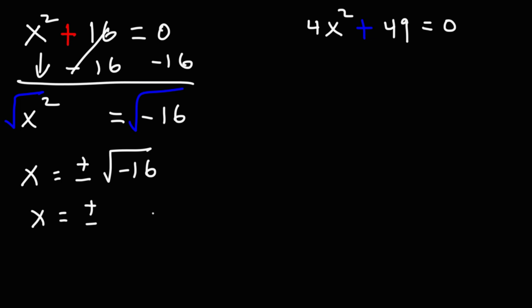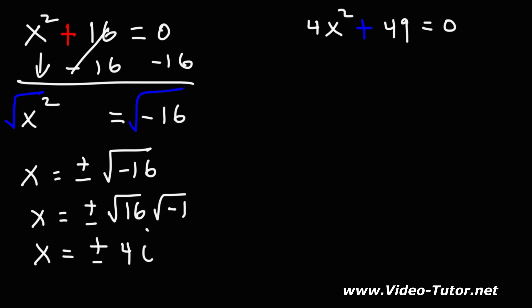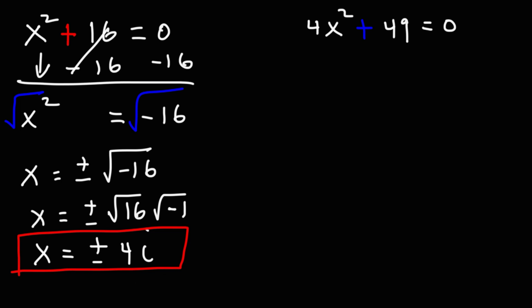Now, the square root of negative 16 — we could write it as the square root of 16 times the square root of negative 1. The square root of 16 is 4, and the square root of negative 1 is i. So the answer is plus or minus 4i. That means we have two imaginary solutions: the first solution is positive 4i, and the second solution is negative 4i.